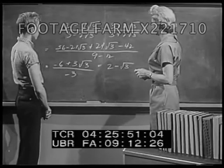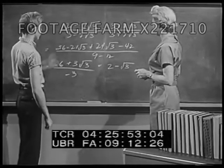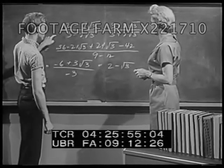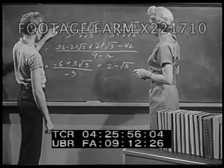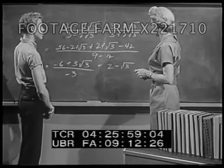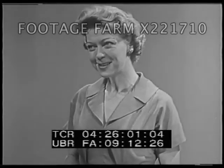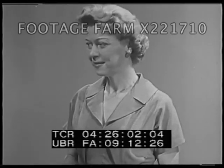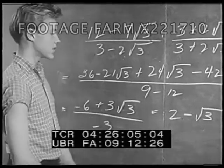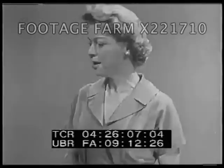But I know what I did, Ms. Perkins. I rationalized the denominator of this fraction by multiplying both the numerator and denominator by 3 plus 2 times the square root of 3. And that gave me this, which led to this, and finally this.